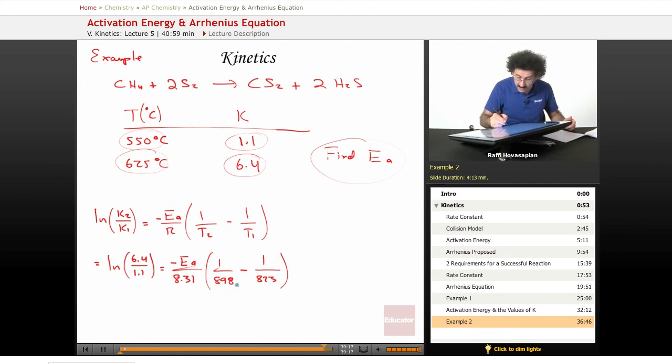When we do this and this, we end up with the following: equals 1.7609 equals minus EA times minus 1.22 times 10 to the negative 5.